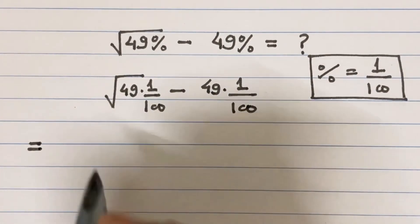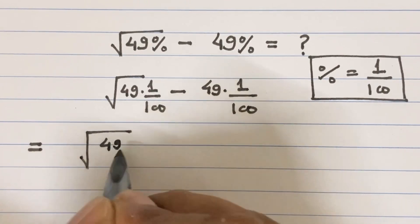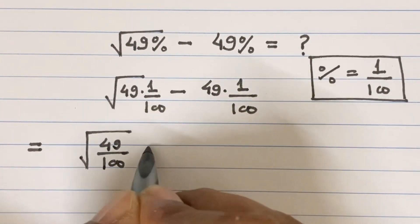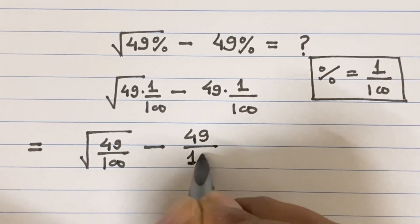So this simplifies to square root of 49 divided by 100 minus 49 divided by 100.